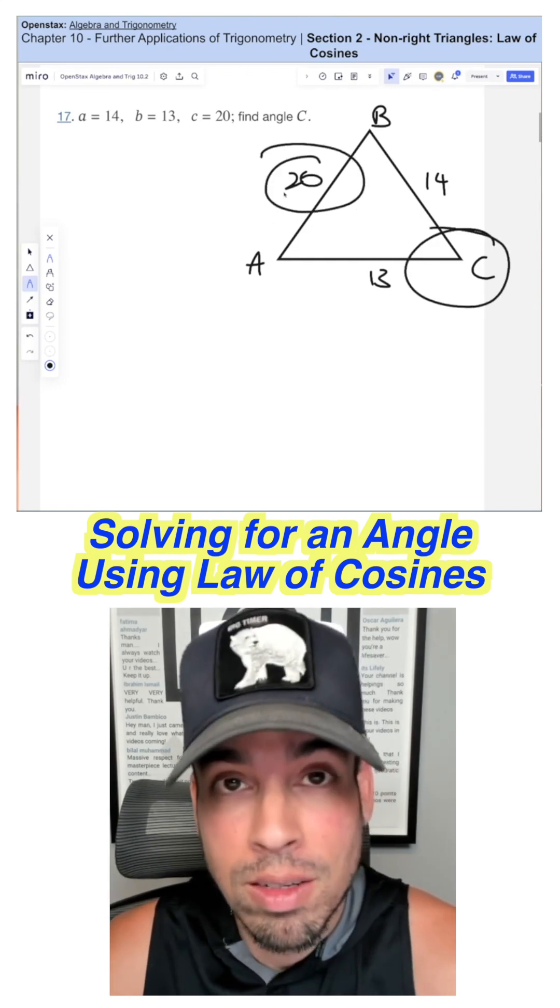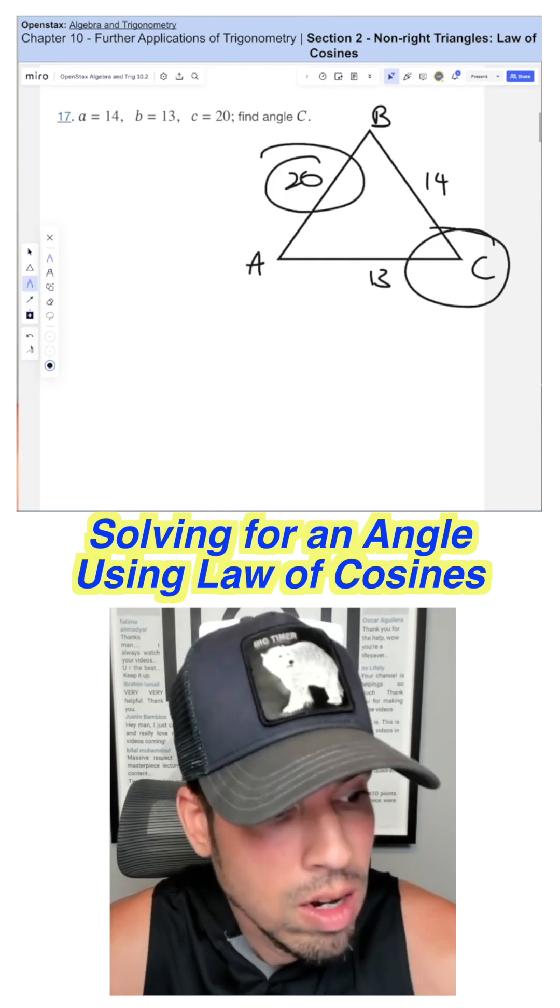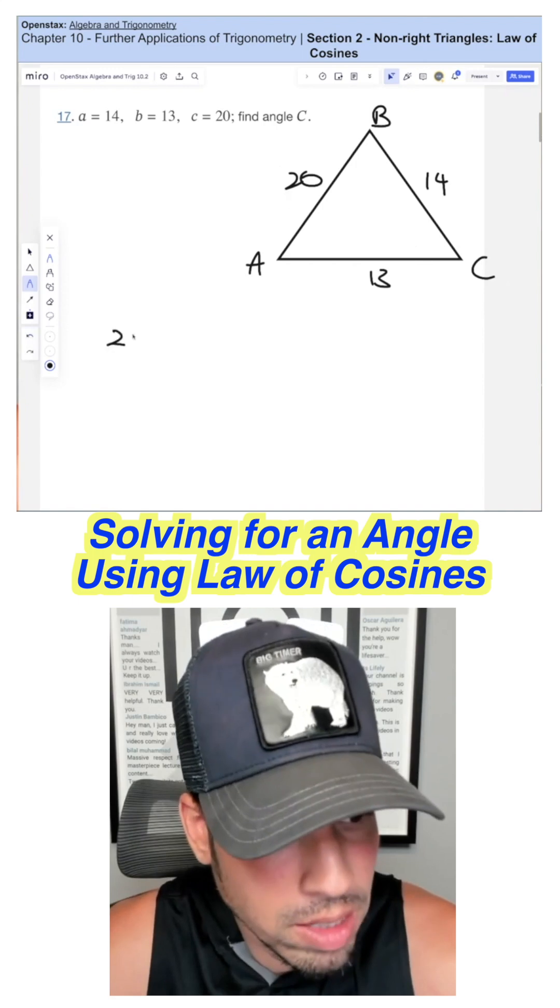We're trying to find this angle. This has got it. This is the side opposite. So this has got to be the side on the other side of the equal sign by itself.